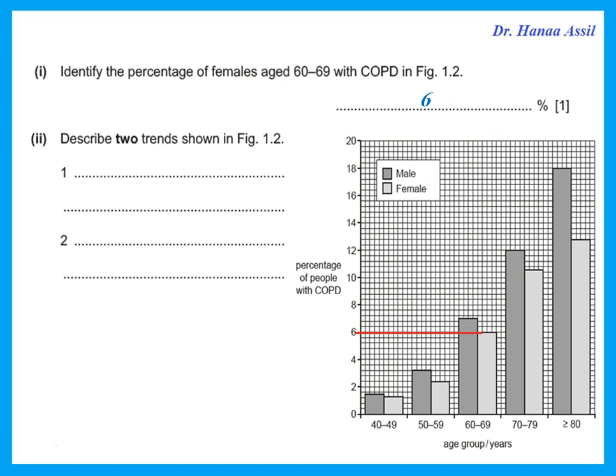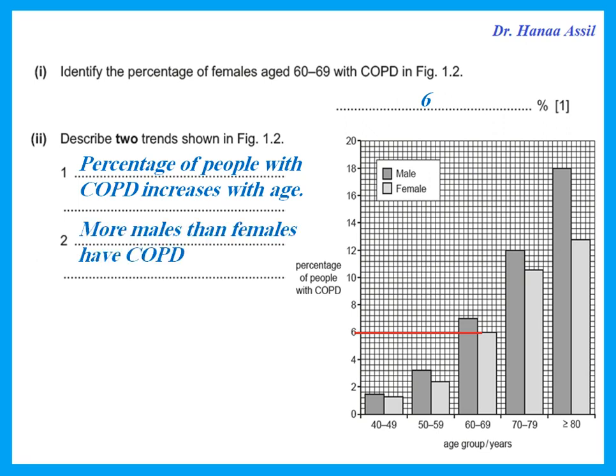Describe two trends shown in the figure. You can see that the percentage of people having COPD increases with age — as the age group increases, the columns become bigger, meaning the percentage of people increases. Also, comparing males with females, more males have COPD than females in each age group.